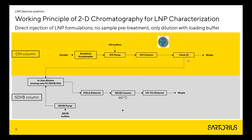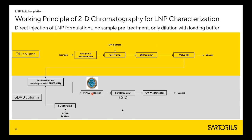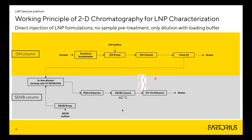In the next step, we elute the particles from the OH column. They travel through the system, get diluted with SDVB buffers, and pass through the MALS detector where we can observe the particles and determine or estimate their size. Then the particles are captured on the SDVB column. We open the particles to release the cargo, and then the cargo can be quantified using UV-visible detectors. In that way, we get information about the quantity of free nucleic acid and the quantity of encapsulated nucleic acid in the same run.